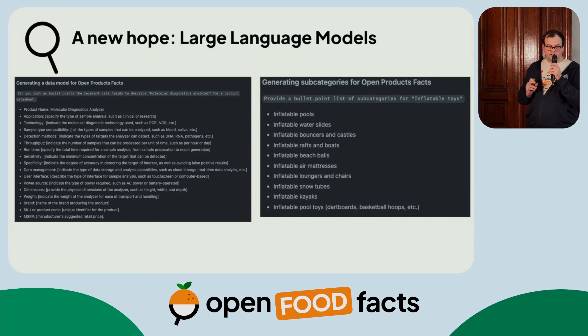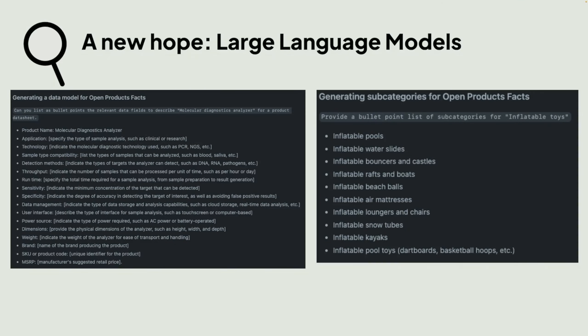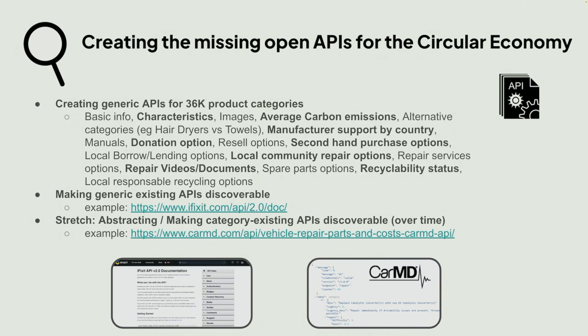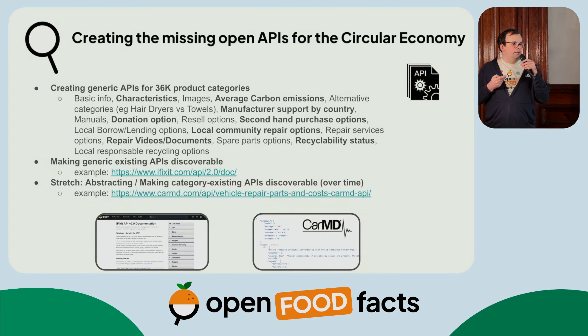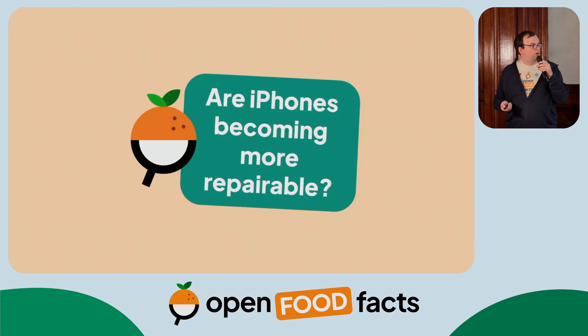There are also new emerging technologies like large language models, which allow us to prepare some data models at very large scale. We have to use them in a thoughtful way, but they offer technical opportunities. For instance, for a molecular diagnostic analyzer — a topic I don't know anything about — we'll have to use them in a very thoughtful, moderated way, obviously. So creating those missing open APIs for the circular economy — lending, borrowing — and being able to make app developers have circular solutions and easy APIs that they can use from Open Product Facts.